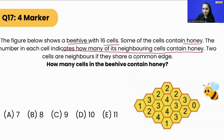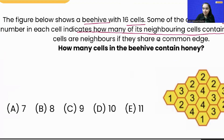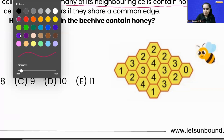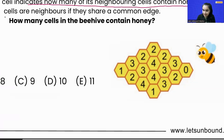Let's start from number zero. Let's assume that number zero is having honey — it contains honey. So what will happen now? If number zero is having honey, that means zero of its neighbors will have honey, right? That means number two and number three — they will not have honey.